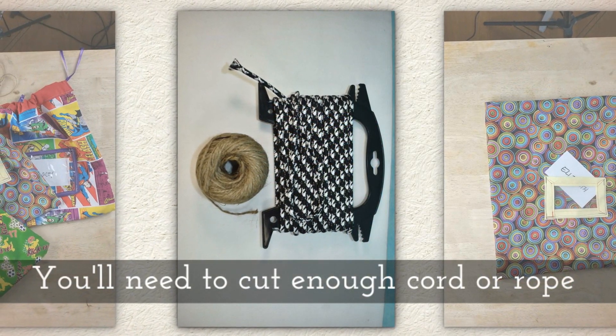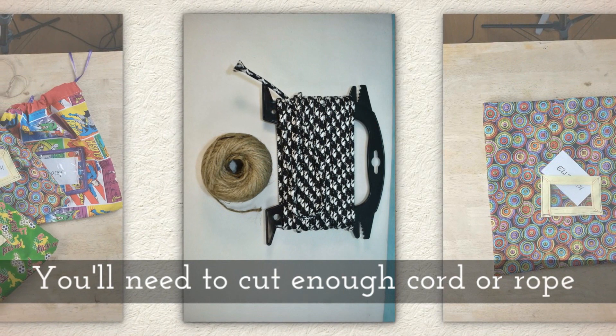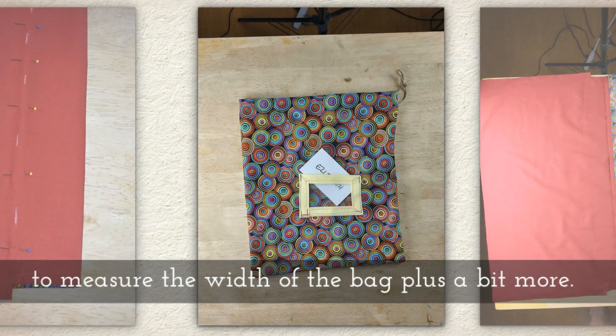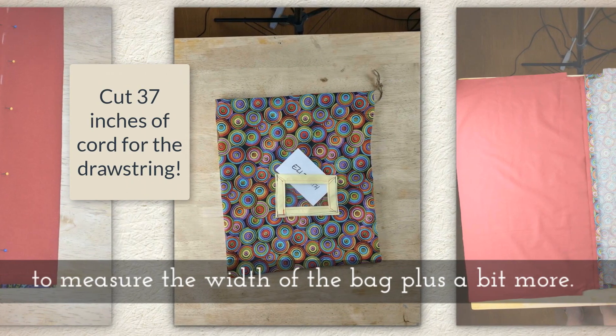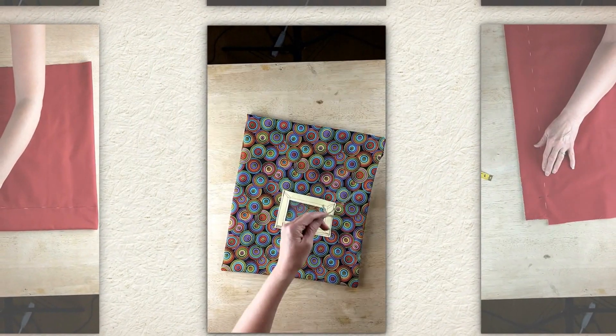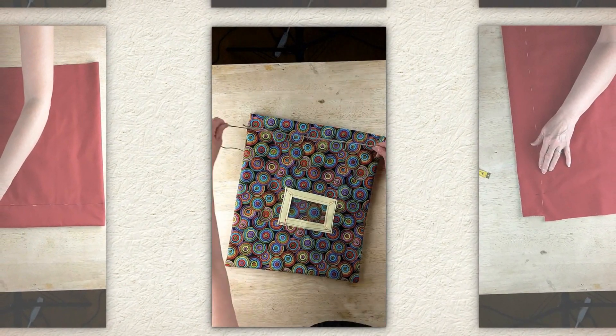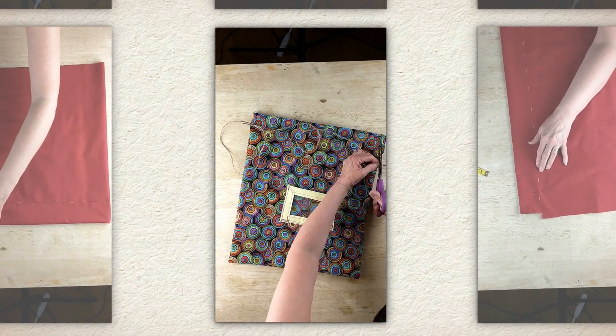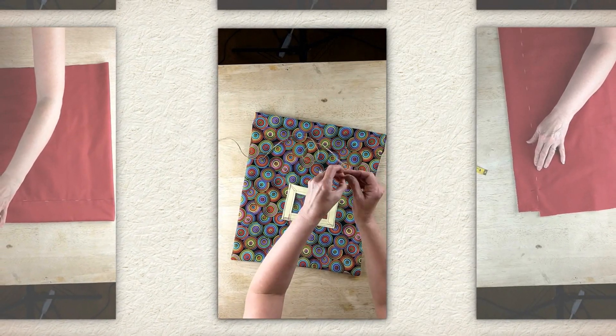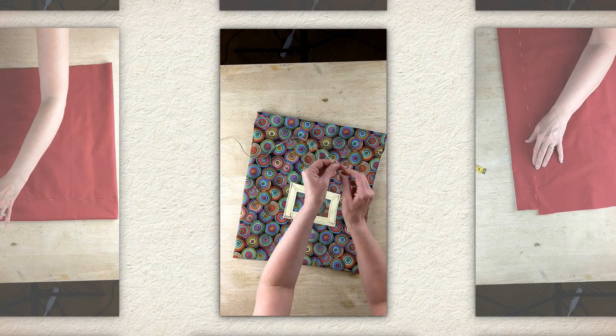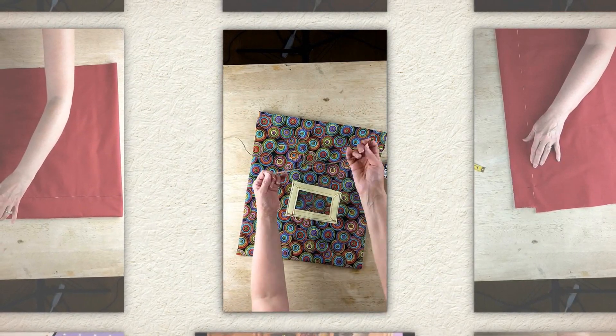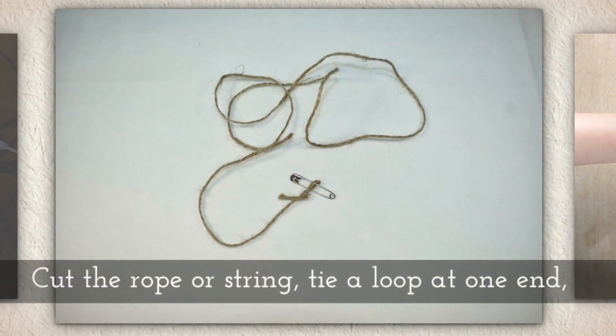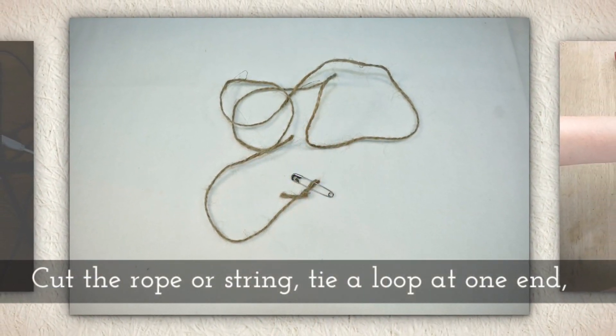Now you'll need to cut enough cord or rope to measure the width of the bag plus a little bit more. There's the width of the bag twice and then just a little bit more like 7 extra inches or so. And now what I'm doing is I'm tying a little knot or loop at the end.